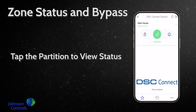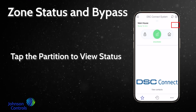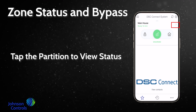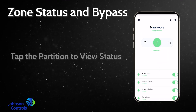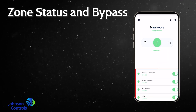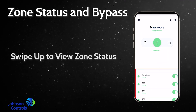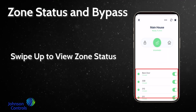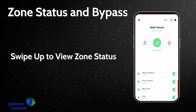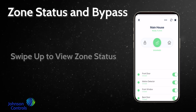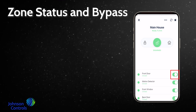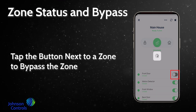Tap the partition to view status. Swipe up to view zone status. Tap the button next to a zone to bypass the zone.